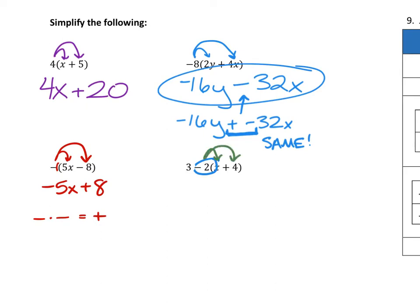So negative 2 times x is negative 2x. Negative 2 times 4 is negative 8. Now, I didn't do anything with that 3, so it still belongs in this equation. But do you notice that 3 and negative 8 are like terms? I can always combine my like terms to continue to simplify. So 3 plus a negative 8 is a negative 5. And I have my simplified expression.